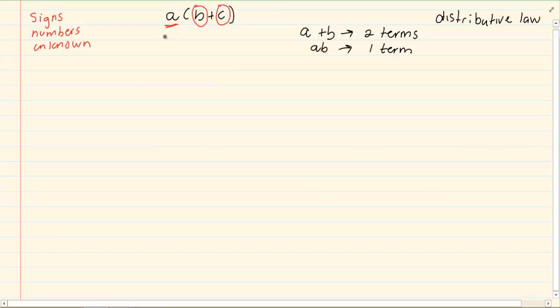Now when we are distributing something from the outside to the inside of the bracket, we need to make sure that that unknown that is outside or that number that is outside needs to go to every term inside. So in other words, the A would go to the B and the C. So this would be AB plus AC.